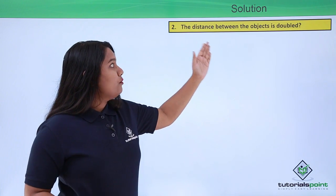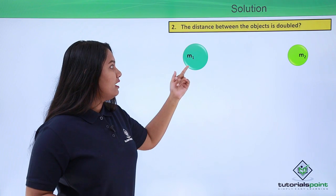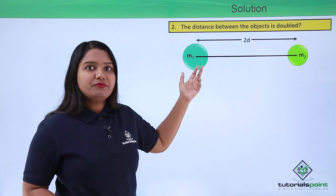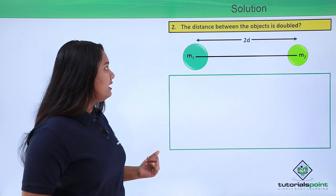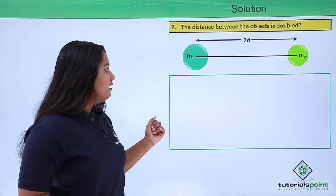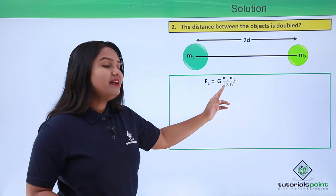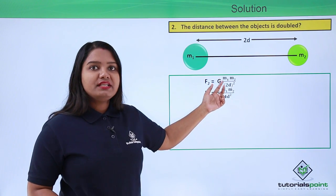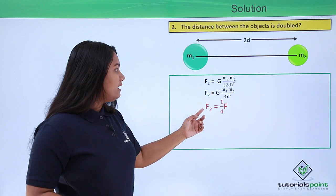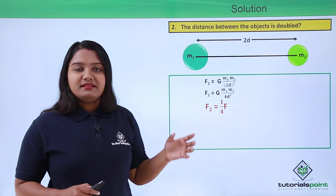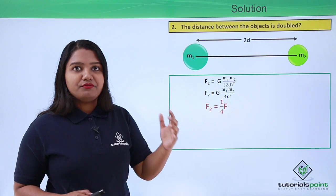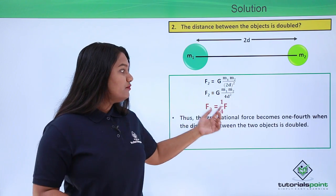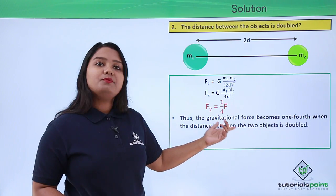For the second case, the distance between the objects is doubled. The masses remain the same — M1 and M2 — but the distance becomes 2D. The force F2 equals G M1 M2 divided by 2D whole squared, which gives F2 equals G M1 M2 by 4D squared, since 2D whole squared equals 4D squared. So F2 equals one-fourth F. The initially existing force has been reduced to one-fourth when the distance between the two objects is doubled.